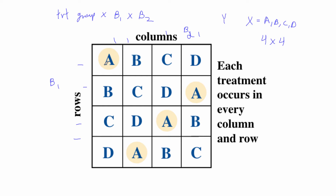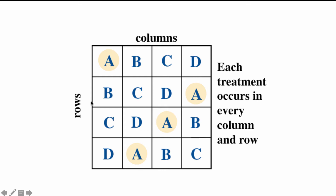For example, there is only one 'a' in the first row and one 'a' in the first column. The same is true for every other 'a' — it's the only one in its row and the only one in its column. The same holds for b, c, and d. Latin square was the name given to these special grids where every cell has a unique symbol for every row and every column.